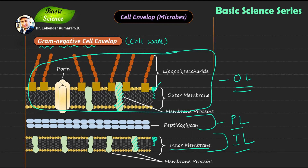And in the middle, you have the peptidoglycan layer — this one right here. It is very important because it's critical for the integrity of the cell. Most antimicrobial agents — cell wall targeting agents like cephalosporins and penicillin — they act on this particular layer and inhibit its formation. That is why they basically disrupt the cell highly effectively.